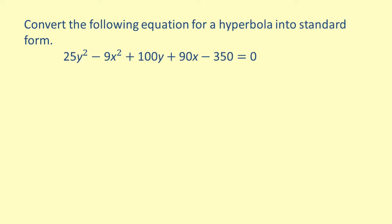Convert the equation 25y squared minus 9x squared plus 100y plus 90x minus 350 equals zero into standard form. First, determine which form it should be in. Since the x squared term is negative, the standard form of the equation will be of the form y minus k squared all over a squared minus x minus h squared all over b squared equals 1.